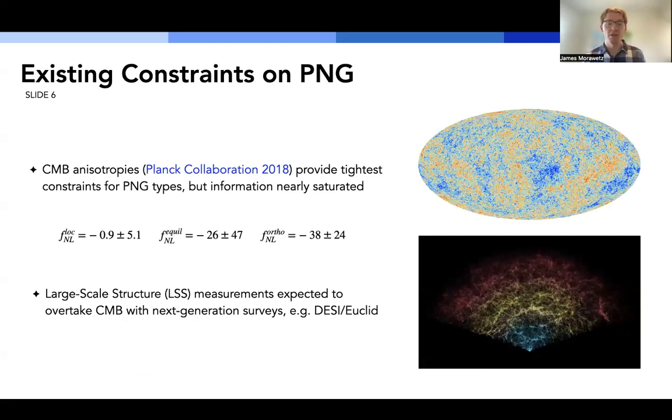So currently, the Planck 2018 CMB anisotropies provide the tightest constraints for the various PNG types, which are listed below. But we believe that this information content is nearly saturated, meaning we don't expect to be able to achieve much tighter constraints in the future. This is partly because the CMB is a 2D measurement, which inherently is limited, on top of the fact that we have a finite number of modes that we can access and easily model. And as a result, we expect that large-scale structure measurements will eventually overtake the CMB in constraining power with next-generation surveys like DESI and Euclid, which will survey much larger volumes and number densities than previous surveys.